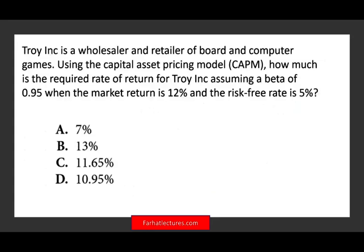Let's take a look at an example that involves actual numbers. Troy, Inc. is a wholesaler and retailer of board and computer games. Using the capital asset pricing model, how much is the required rate of return for Troy, assuming a beta of 0.95 when the market return is 12% and the risk-free rate is 5%? Simply put, they're asking you to compute CAPM — your cost of equity — and here you have to memorize and understand the formula.